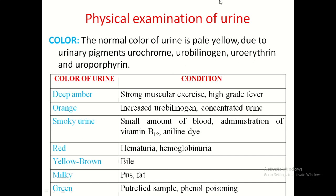The normal colour of urine is pale yellow or straw-coloured, due to the presence of urinary pigments — urochrome, urobilinogen, uroerythrin, and uroporphyrins. Colorless urine occurs when urine is diluted or there is excessive polyuria. Deep amber colour is due to strong muscular exercise or high-grade fever. Orange colour is due to increased urobilinogen, concentrated urine, or dehydration.